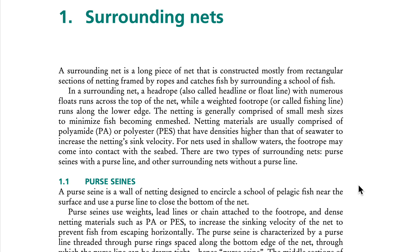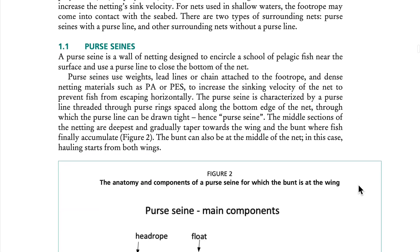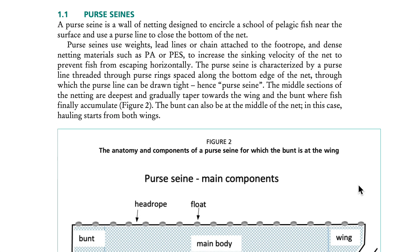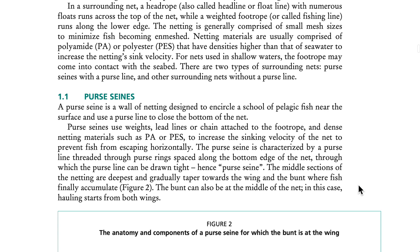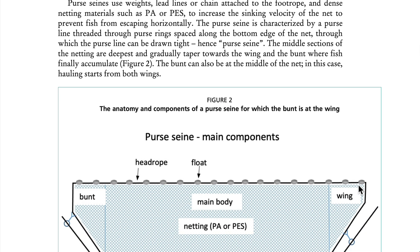There are two types of surrounding nets: purse seines with a purse line, and other surrounding nets without a purse line. A purse seine is a wall of netting designed to encircle a school of pelagic fish near the surface, and uses a purse line to close the bottom of the net. Purse seines use weights, lead lines, or chain attached to the foot rope, and dense netting materials such as polyamide (PA) or polyester (PS) to increase the sinking velocity of the net.